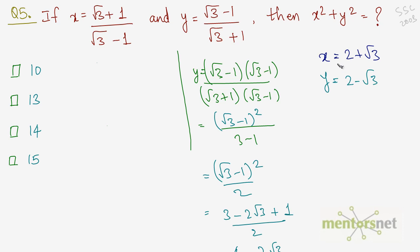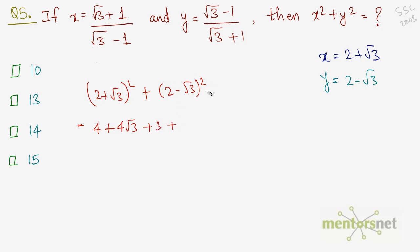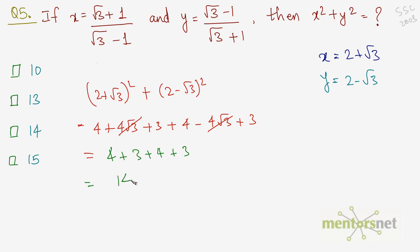Now substituting into x² + y²: (2 + √3)² + (2 - √3)². Expanding: (4 + 4√3 + 3) + (4 - 4√3 + 3). The 4√3 and -4√3 cancel out, leaving 4 + 3 + 4 + 3 = 14. So the answer is 14.